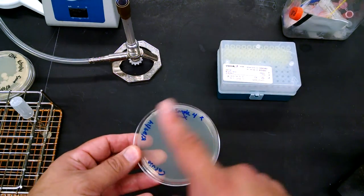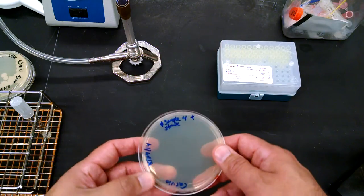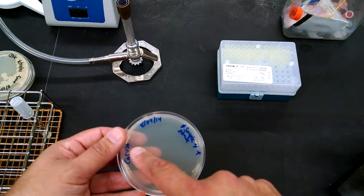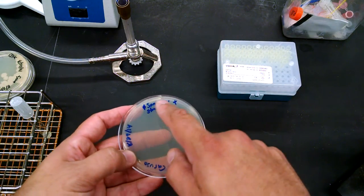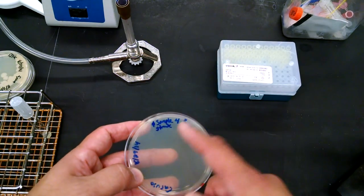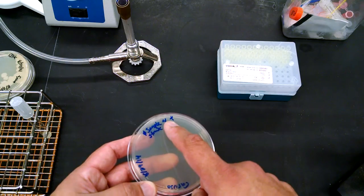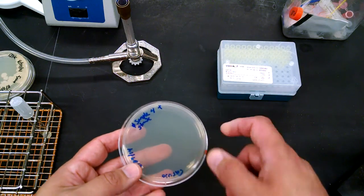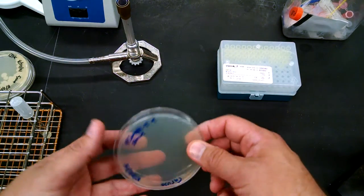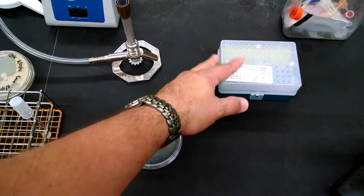So we have a plate that we streaked out the sample, so this is Caruso 829 phage sample number 4 of 6, streak, and there's the X right there showing that's where the streak ended. So what we're going to do is we're going to put top agar on that.